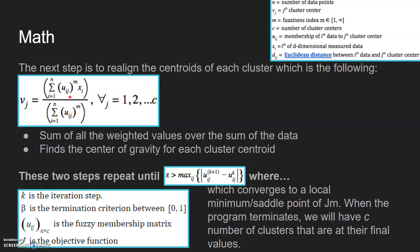This is true for all values from 1 to C. It's the sum of all weighted values over the sum of the data. Basically it just finds the center of gravity for each cluster centroid.